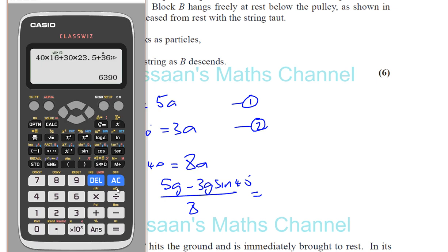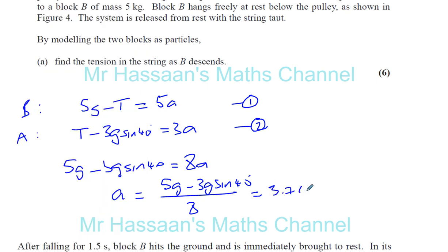Let's work out what that is. We're going to take g as 9.8. So 5 times 9.8 minus 3 times 9.8 times sine 40. Make sure it's in degree mode, yes it is. Divided by 8. And that gives us 3.763.